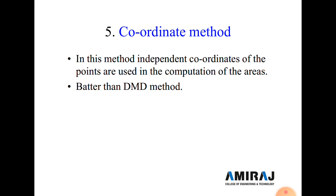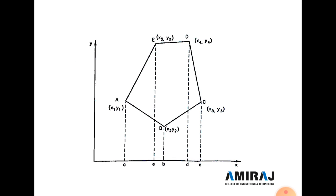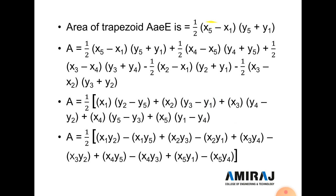The fifth method is the Coordinate Method. In this method, independent coordinates of the points are used in the computation of area — it is considered better than the DMD method. With coordinates (x, y) for all points, the area formula is: 2A = (x1·y2 − x2·y1) + (x2·y3 − x3·y2) + (x3·y4 − x4·y3) + (x4·y5 − x5·y4) + (x5·y1 − x1·y5), where the starting and ending points are the same.